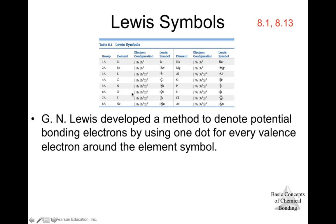For family seven, we have seven valence electrons. We write those around the symbol — for F (fluorine), we have three pairs of electrons and one individual electron. Chlorine is also family seven: three pairs and one single electron, which can be placed in any arrangement around the chlorine symbol.